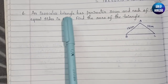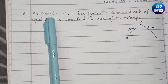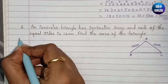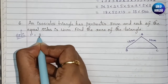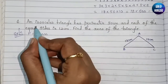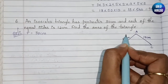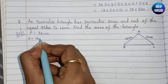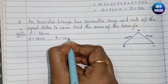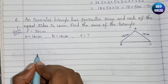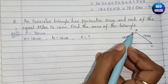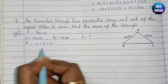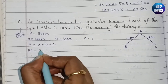The last question of this exercise: an isosceles triangle has a perimeter of 30 centimeter, and each of the equal sides is 12 centimeter. In an isosceles triangle two sides are equal, so a equals 12 centimeter and b equals 12 centimeter. We need to find c and then the area.